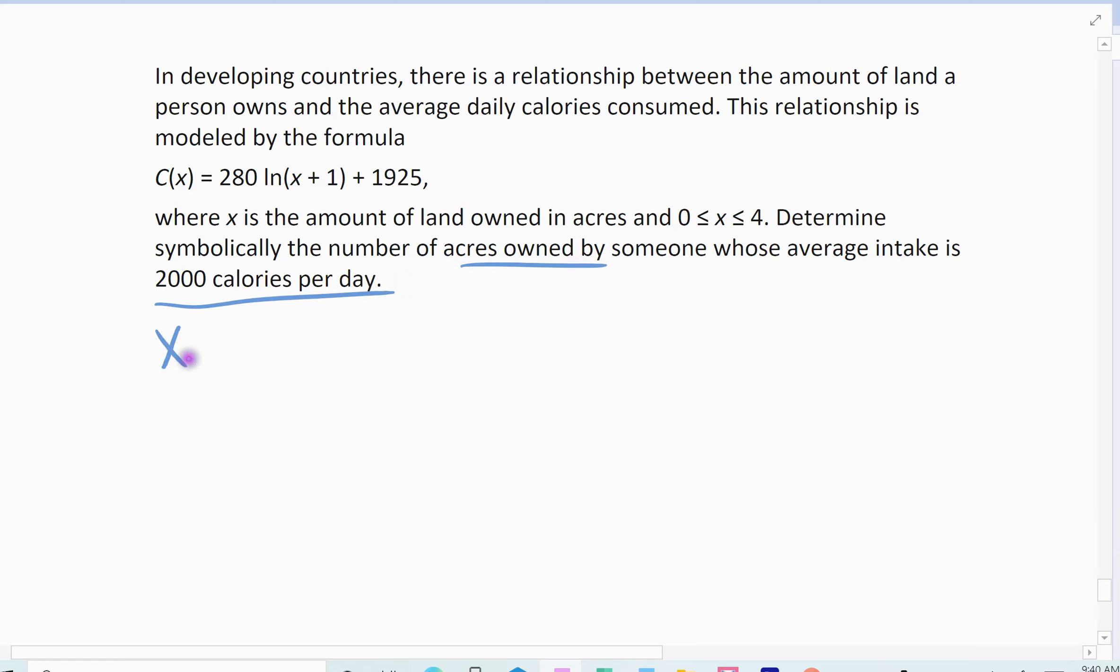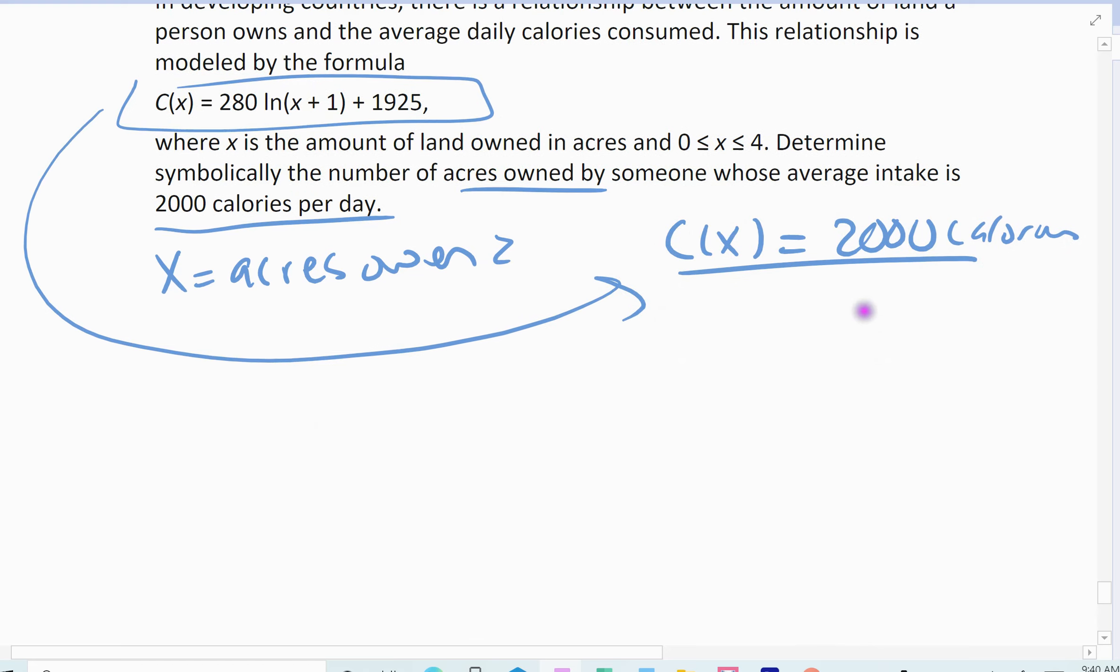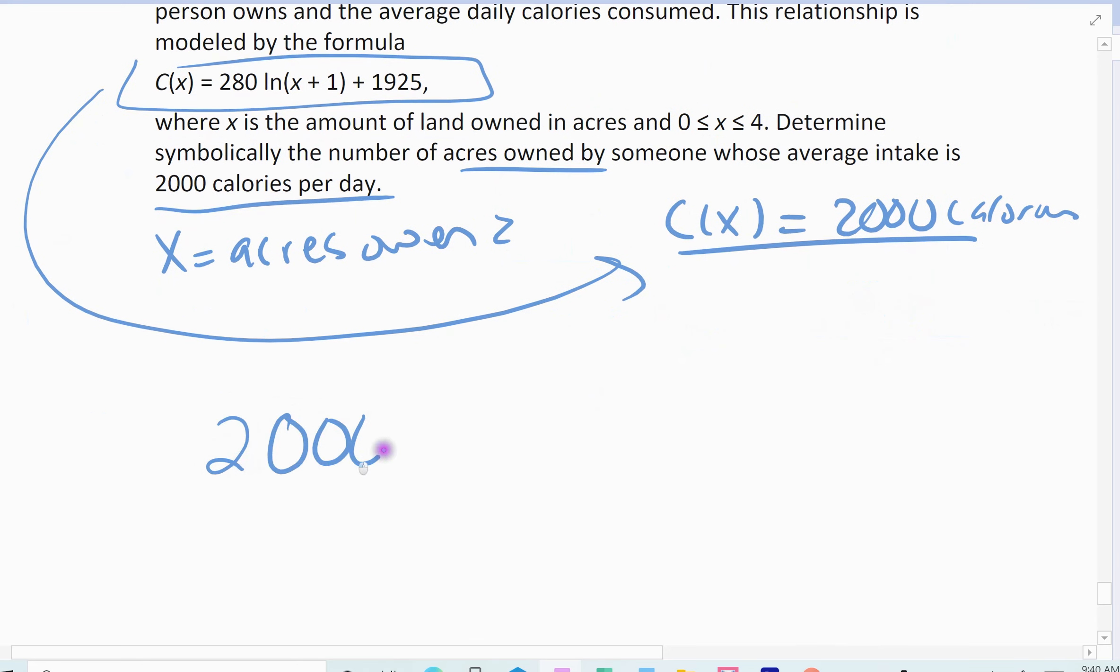So we want to find the x, the acres owned, when our calorie intake is 2,000. That's our calories. And so you take this equation, set it equal to 2,000 and solve.